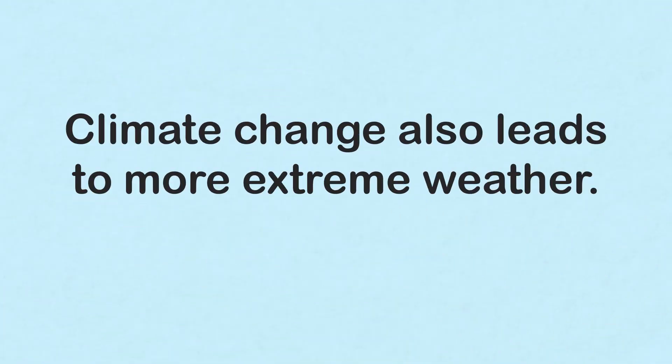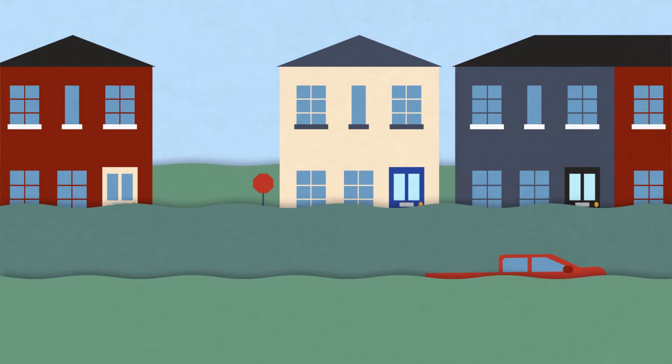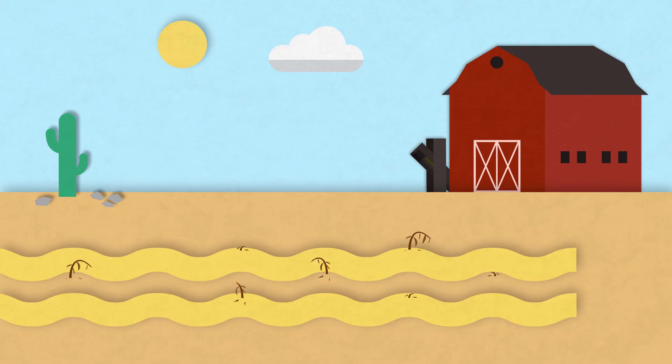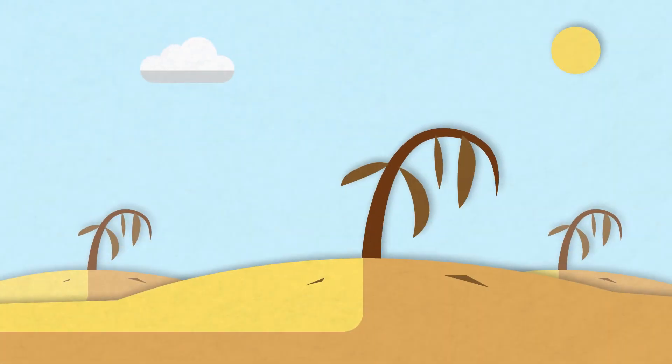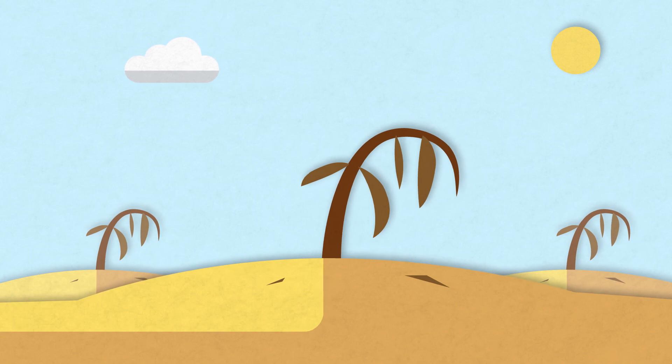Climate change also leads to more extreme weather, such as major storms, floods, heavy snowfall, and longer, more frequent droughts. This affects our ability to produce food. As growing crops becomes more difficult, the areas where plants and animals can live shifts, and water supplies are diminished.